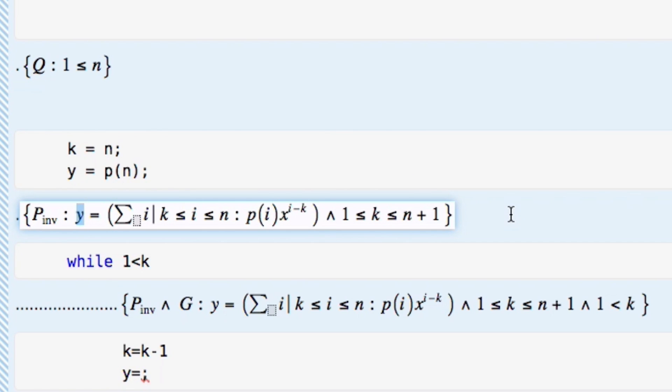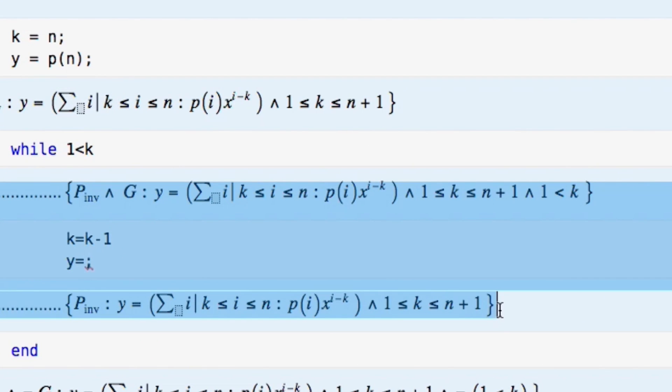And that's exactly what you want. So now you've derived the initialization to be correct. And finally, I want you to focus on deriving the loop body to be correct. And then again, I'll see you in the next video.